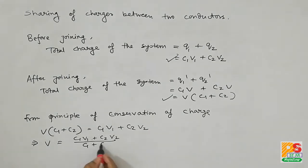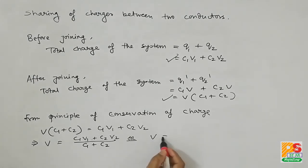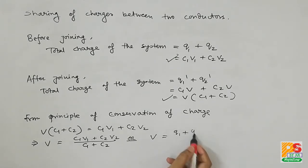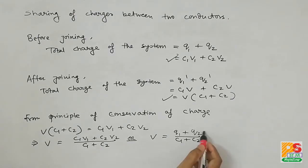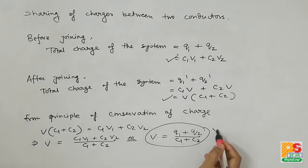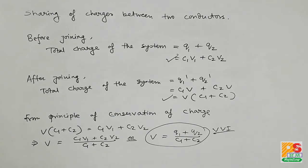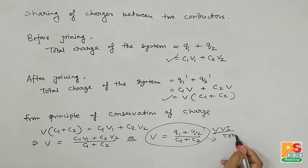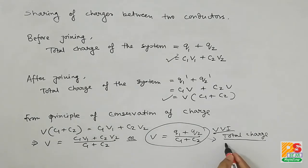From this we get V equals C1V1 plus C2V2 divided by C1 plus C2. Since C1V1 is Q1 and C2V2 is Q2, the common potential can also be written as Q1 plus Q2 divided by C1 plus C2 — that is, common potential equals total charge divided by total capacitance. You should remember this formula because we will use it later.